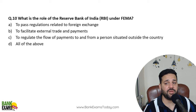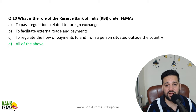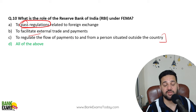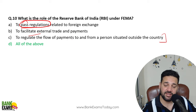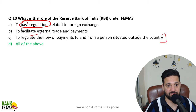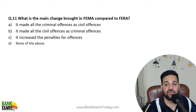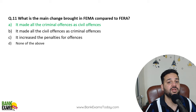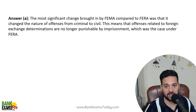What is the role of RBI under FEMA? RBI passes regulations to facilitate external trade and payment and to regulate the flow of payment to and from persons situated outside the country. They are facilitating external trade and payment and regulating the whole forex industry. A key change FEMA brought compared to FERA is that all offences were made civil offences under FEMA, whereas under FERA they were criminal offences.